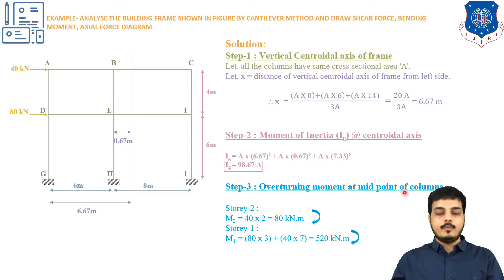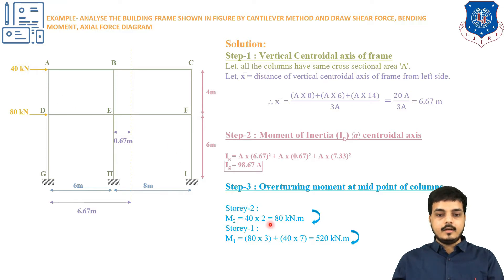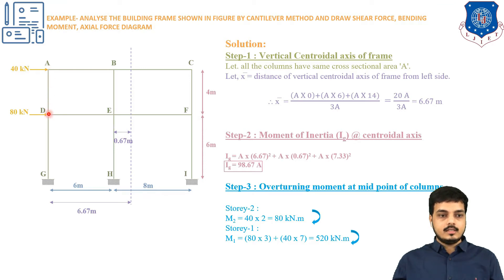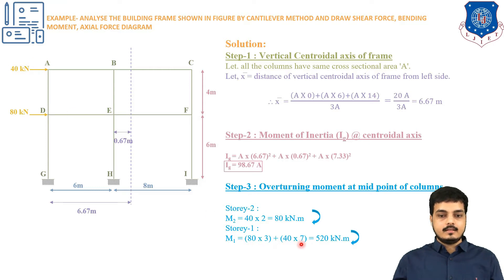Step 3 is the overturning moment at the mid-part of the column. For story 2, standing at the mid-point, the bending moment is 40 kN multiplied by half of 4 meters (which is 2), giving 80 kN·m clockwise. For story 1, the overturning moment is 40×7 + 80×3 = 520 kN·m.